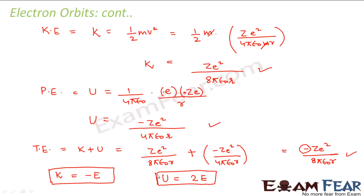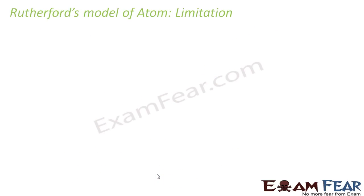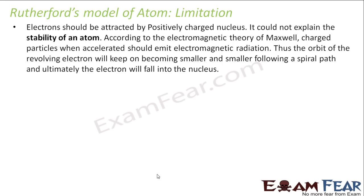This was Rutherford's model of atom. Rutherford's model was able to successfully explain many things - the existence of the nucleus, the arrangement of electrons, and the electron orbits. However, this model also had certain limitations. The first limitation was that it could not explain the stability of an atom.